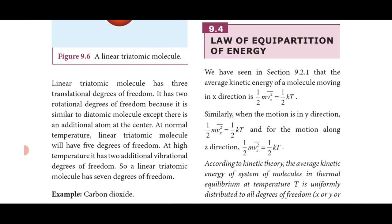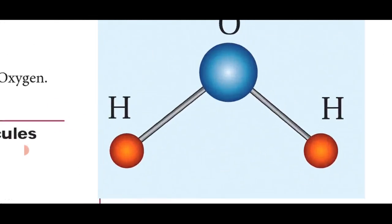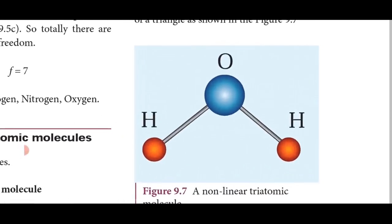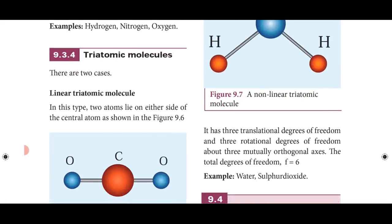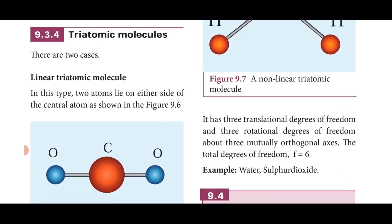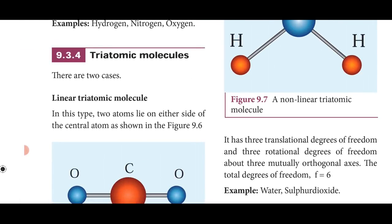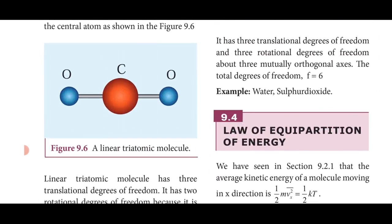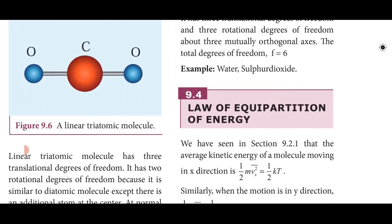So the linear triatomic molecule has five degrees of freedom total. For non-linear triatomic, the three atoms lie at three different vertices. It has three translational and three rotational degrees of freedom, giving f = 6. Examples of non-linear triatomic molecules are water and sulfur dioxide.